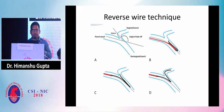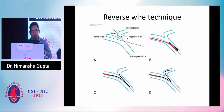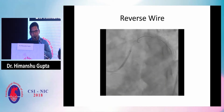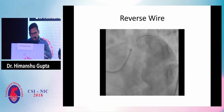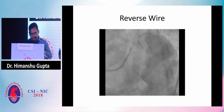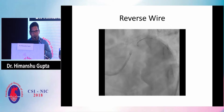We then decided to use the reverse wire technique, in which a Crusade catheter is used — through the end hole, the main branch is wired first, and then the wire is reversed on itself taking a 180-degree turn and made to prolapse into the side branch. Here we can see the Crusade catheter in the OM branch, and the wire is allowed to prolapse into the side branch as we pull the Crusade catheter backwards.